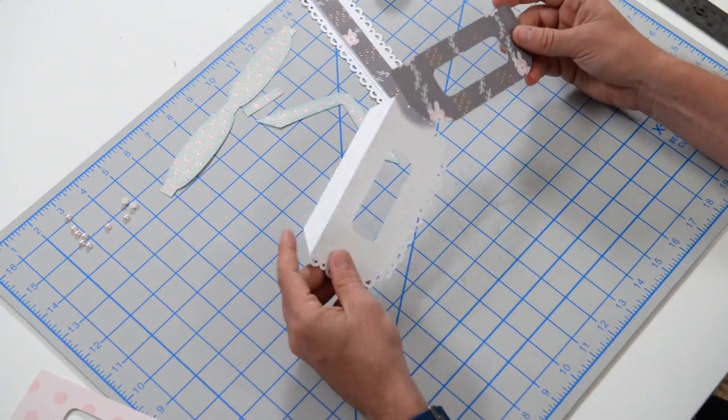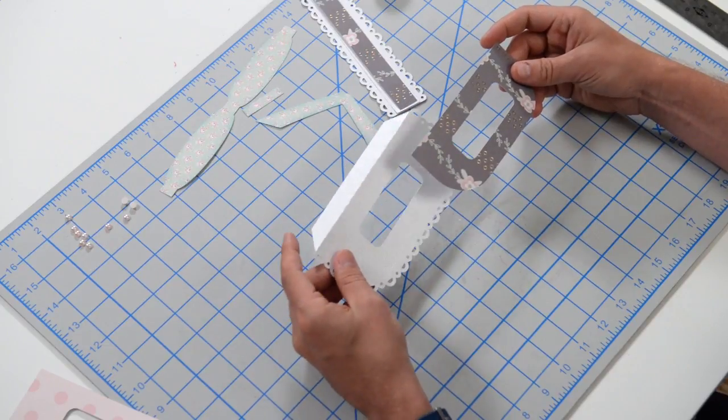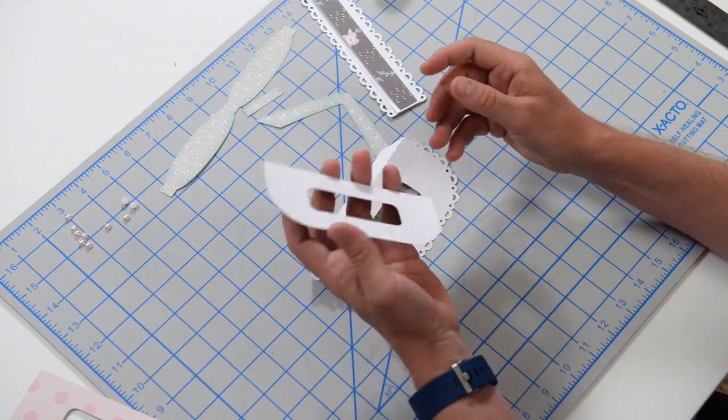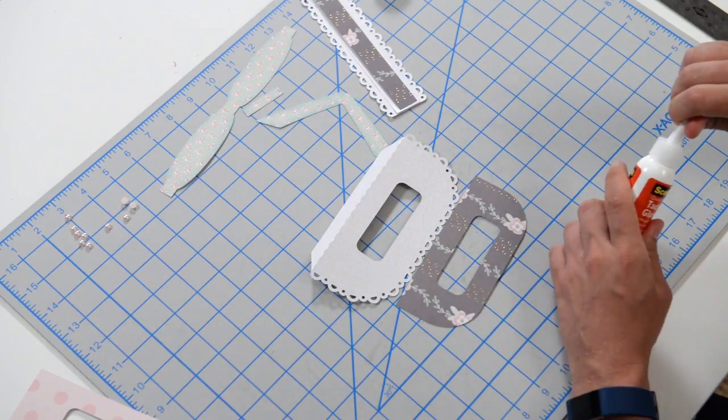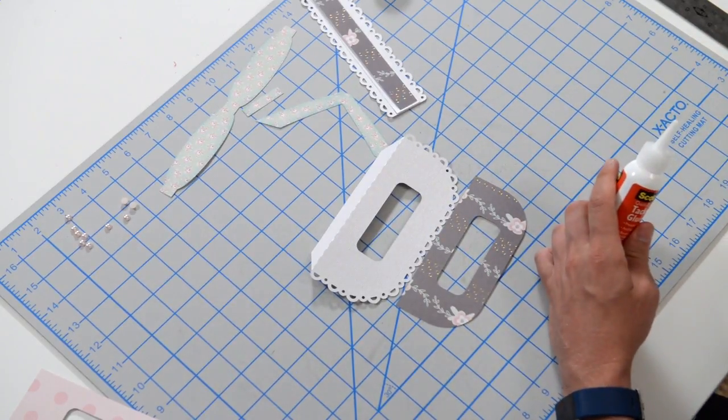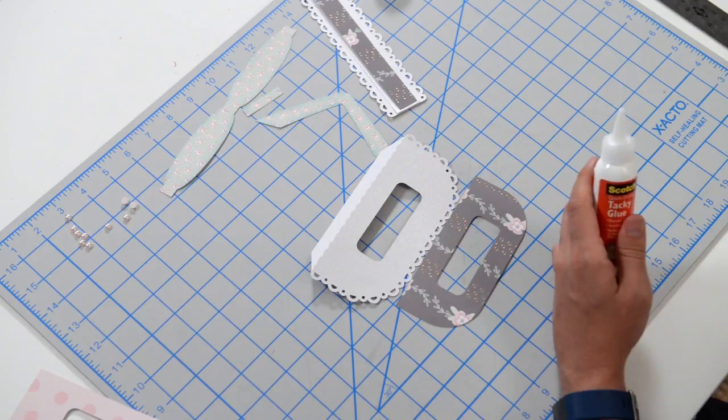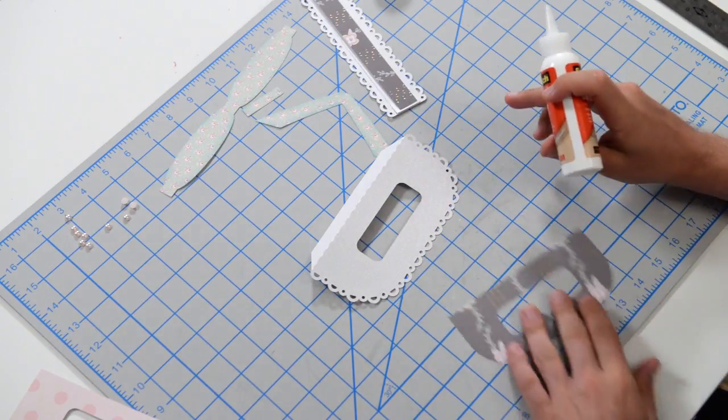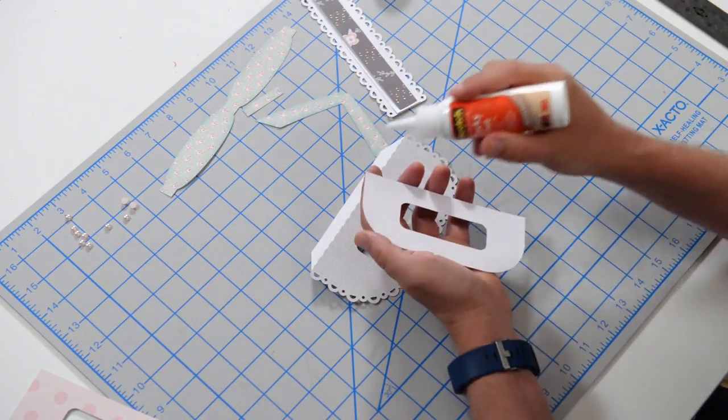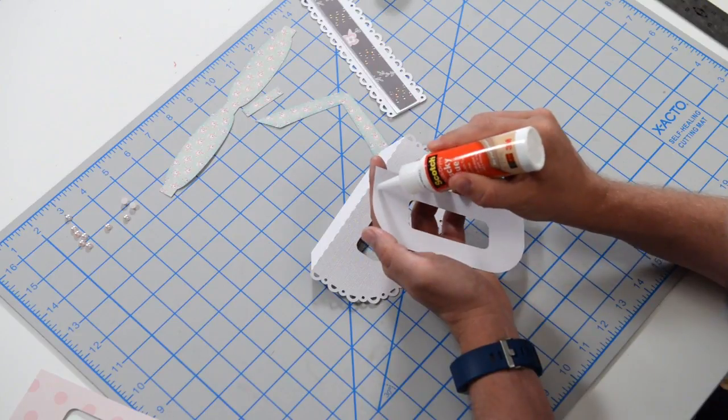So we have the little flap that's going to close the bag. We have this little accent piece that we're going to get glued onto that first. And again, I only say first because this is the order that I'm doing it in, but you're welcome to do it in any order you'd like to do it in.